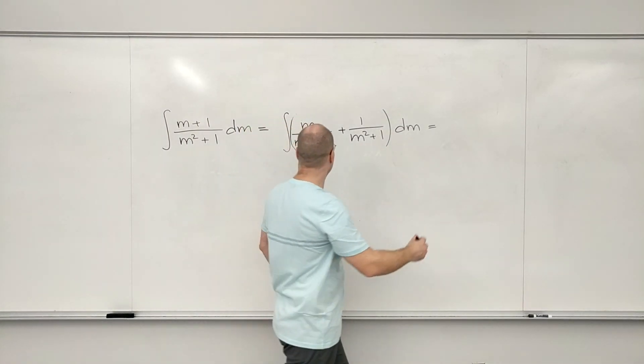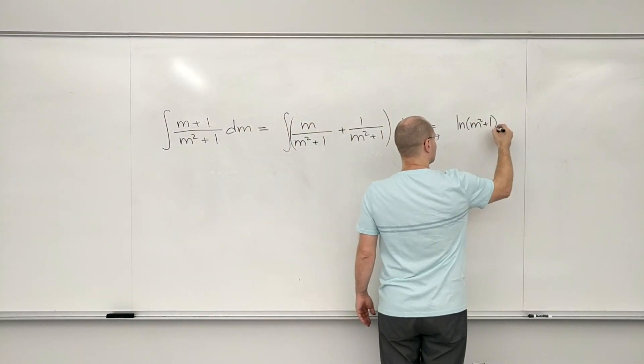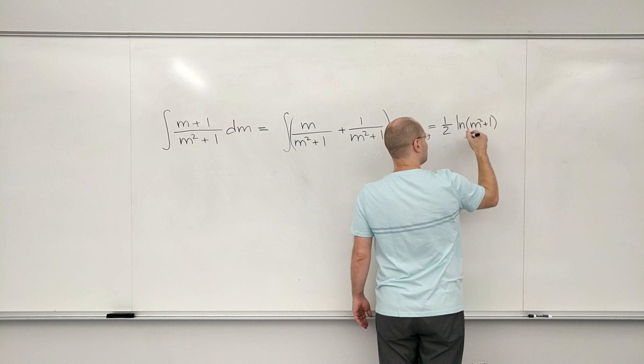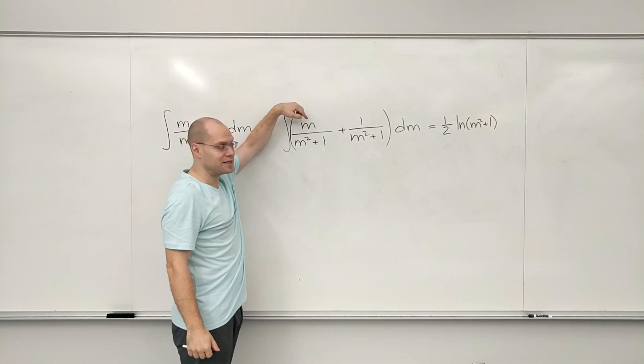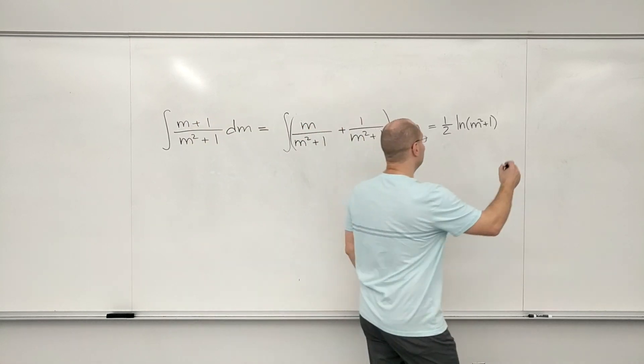And this is our 10. Not quite. 1 half. Because we don't have the derivative of m squared plus 1, we just have half of that, so the answer is half of what it would have been.